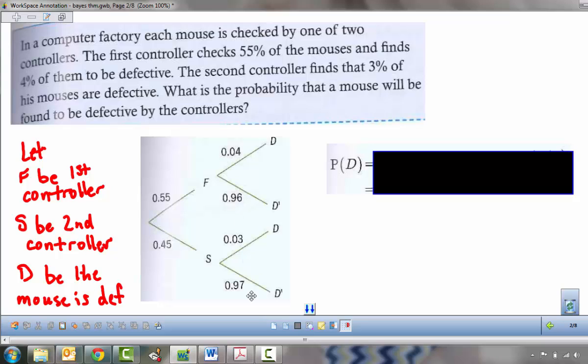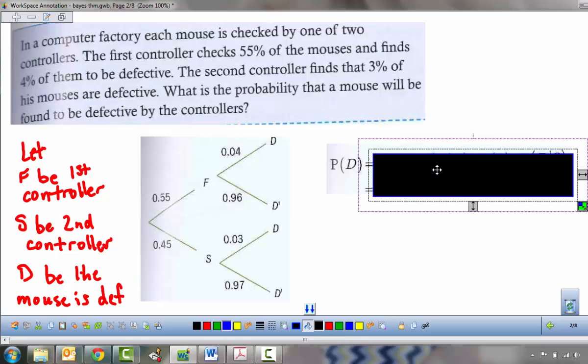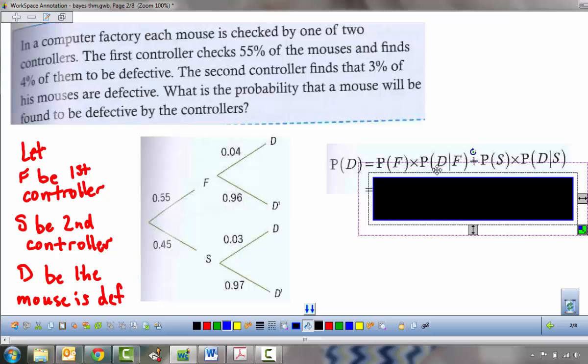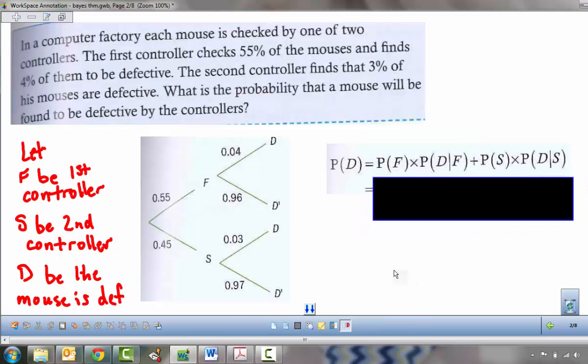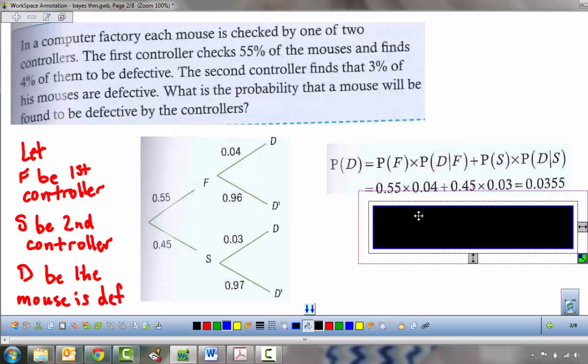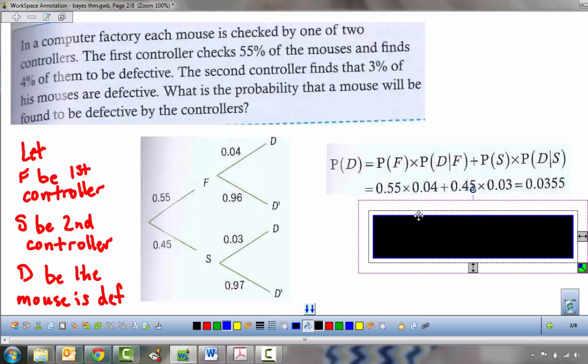So now we use our total probability formula to find the probability that a mouse is defective. We don't know who checked it. We don't know if it was the first controller or the second controller, but we are interested in whether or not a mouse will be defective. Our total probability formula says this. The probability of a defect will be the probability of the first one times the probability that it's defective given that it's the first controller, plus the probability that it's the second, plus the probability that it's defective given the second. It's just the sum of these two sets of branches, and that probability calculation ends up being .0355.